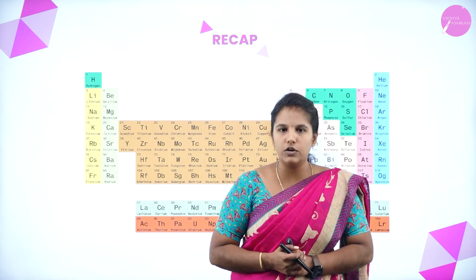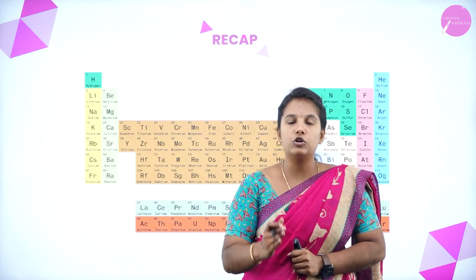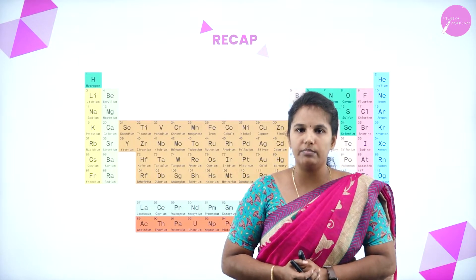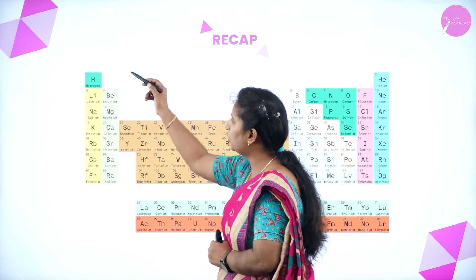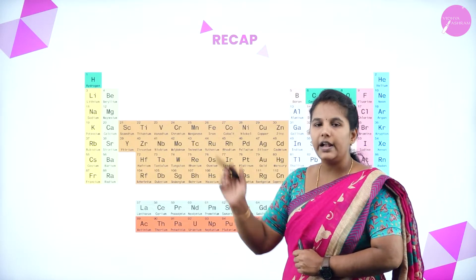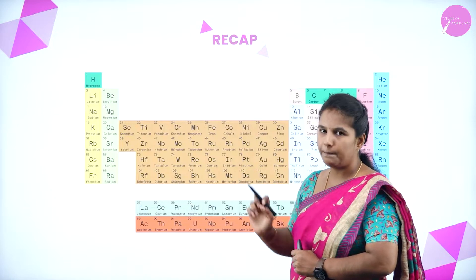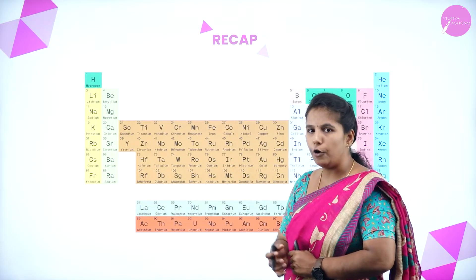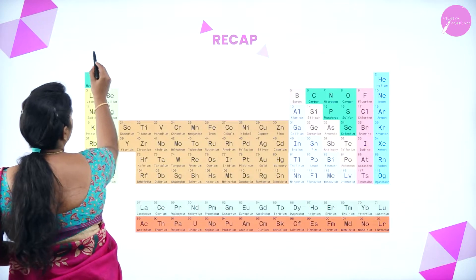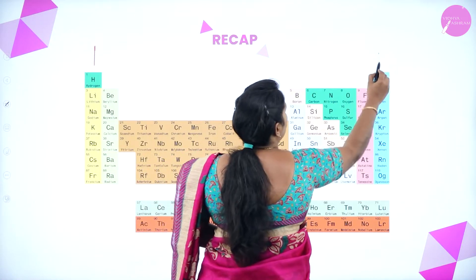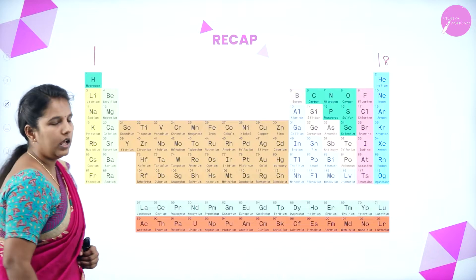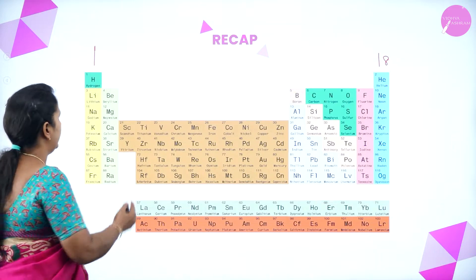He found that there are groups and periods in the periodic table. The vertical columns are known as groups and horizontal rows are known as periods. There are 18 groups in the periodic table.